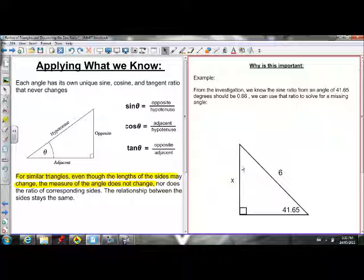So why is this important? From the investigation we did on GSP, we know the sine ratio from an angle of 41.65 degrees should be 0.66. If we have a 41.65 degree angle, the ratio of the opposite side to the hypotenuse should be 0.66 for all right-angle triangles with a reference angle of 41.65. Because all right-angle triangles with an angle of 41.65 are similar triangles, all three of those angles would have to be equal.